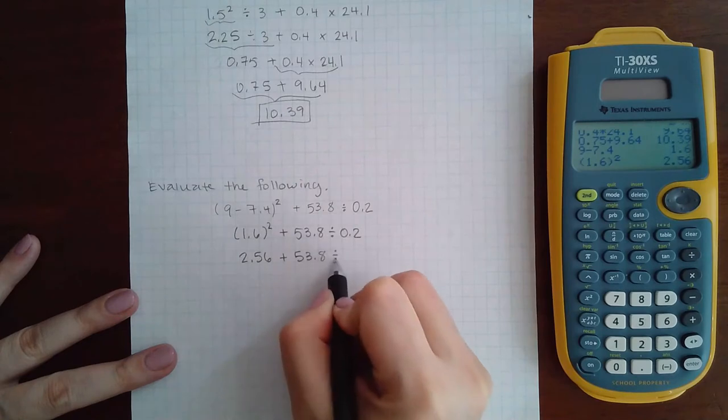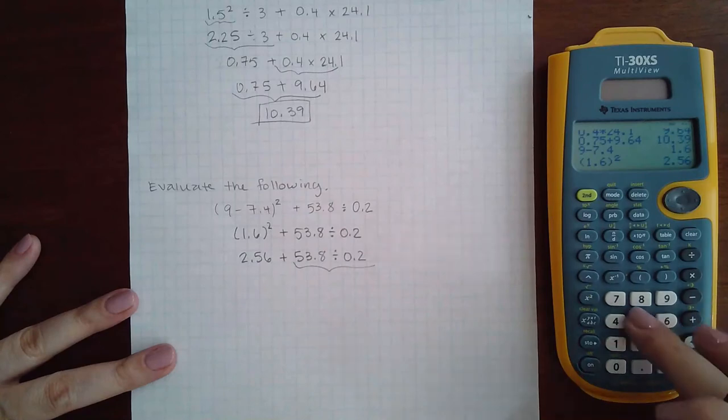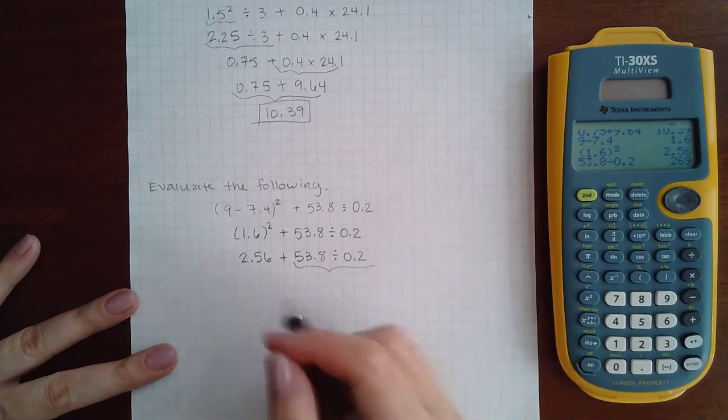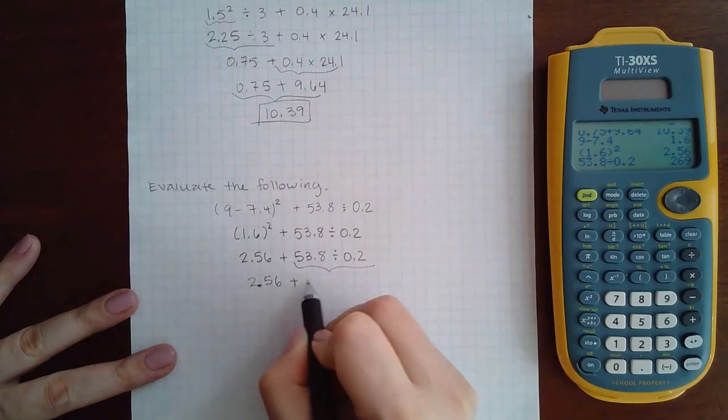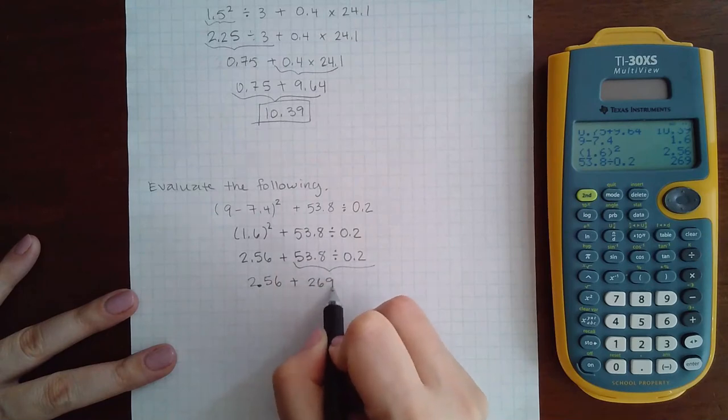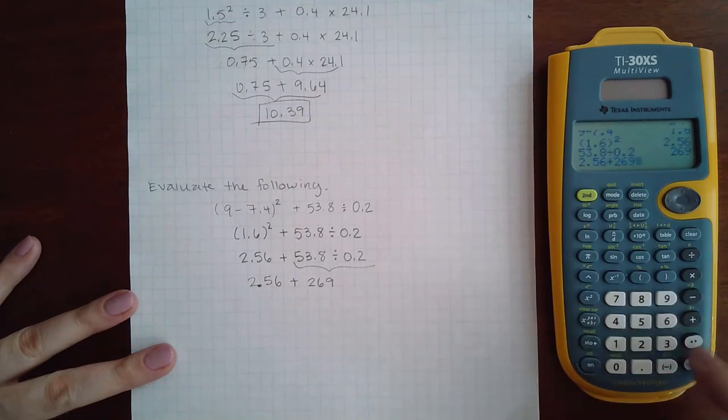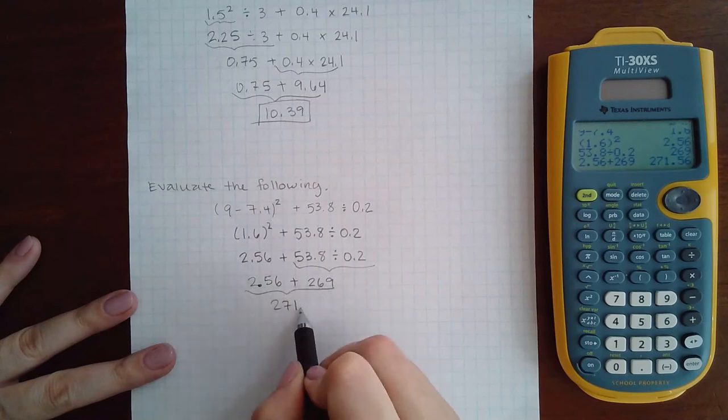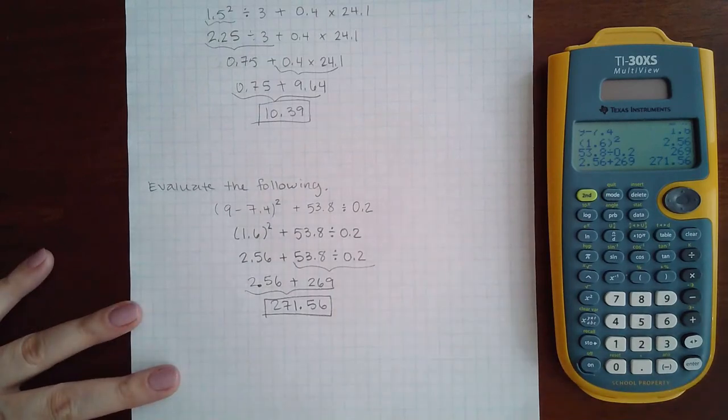Next step is to do the multiplying and dividing, and I only have one operation of that. And I get 2.56 plus 269, and then 2.56 plus 269 is 271.56, and that's the end of this topic.